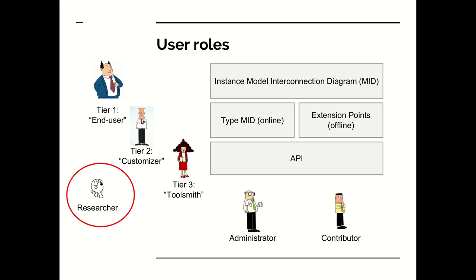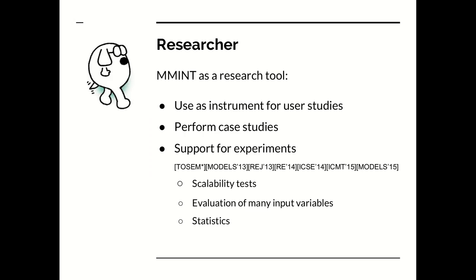Having seen how to use Mint from the perspective of the end user, the customizer and the toolsmith, we now focus on the use of Mint to do research. As a researcher, you can use Mint for various purposes. For example, if you're doing an empirical study, you can configure Mint with specific model types and operators, give it to participants in your user study, and observe them doing various model management tasks. You can also use Mint as a workbench in which to do case studies, and to support doing experiments such as scalability tests and experiments with many independent variables. You can also do some statistics with Mint.